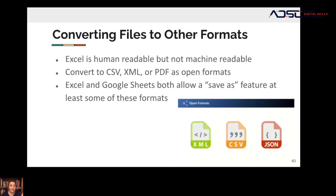There are also ways to convert other files. Excel is human readable but not machine readable — when we say machine readable, we mean it can be read in other programs like R or MATLAB, which Excel unfortunately cannot. But there is a file type that can, called a CSV — comma separated values. You can convert Excel into CSV, which is kind of the gold standard for keeping your data clean and readable. When using Excel, make sure you have a backup of your data saved as a CSV file. Both Excel and Google Sheets have a 'save as' function that will convert your data spreadsheet into different file formats.